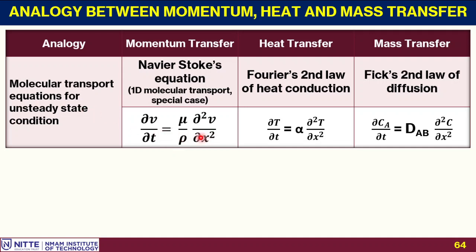The equation written is the first derivative with respect to time and the second derivative with respect to space. The constants are μ/ρ (kinematic viscosity, i.e., momentum diffusivity), α = k/(ρ·Cp) (thermal diffusivity), and D_AB (mass diffusivity). All three terms have the same unit of meter squared per second. These are the three important relations for the unsteady state condition.